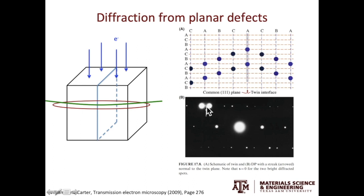In this example, you see two very bright spots, indicating the excitation error is zero. Between these two bright spots, you see fairly faint streaking. The streaking is from the presence of the planar defect.